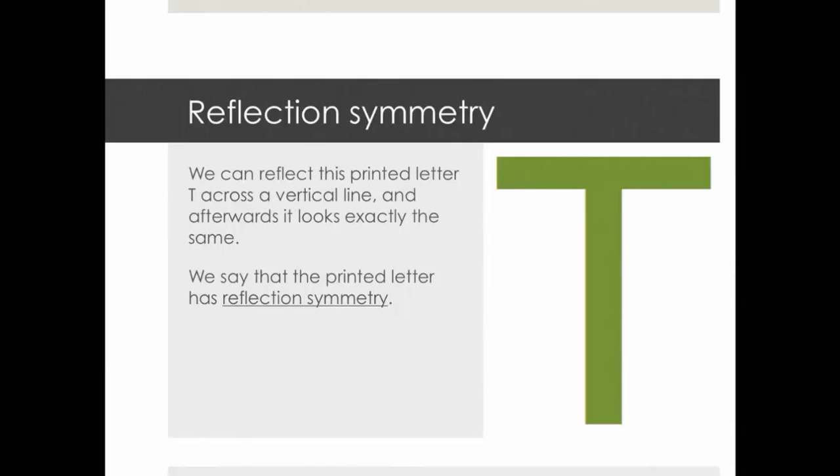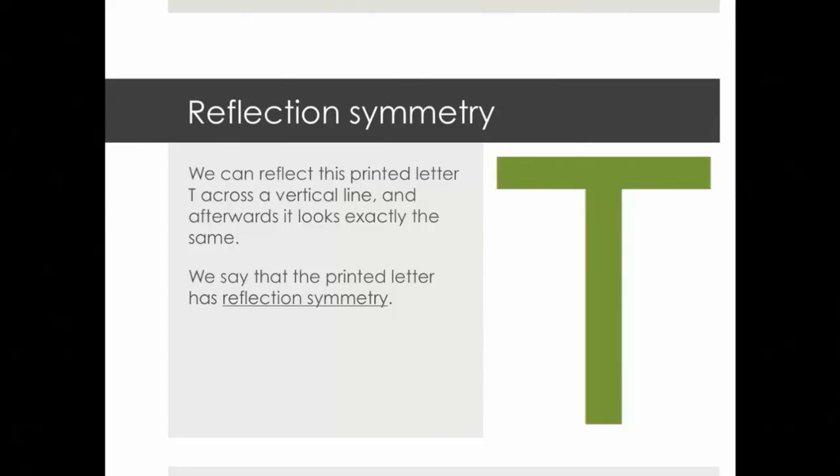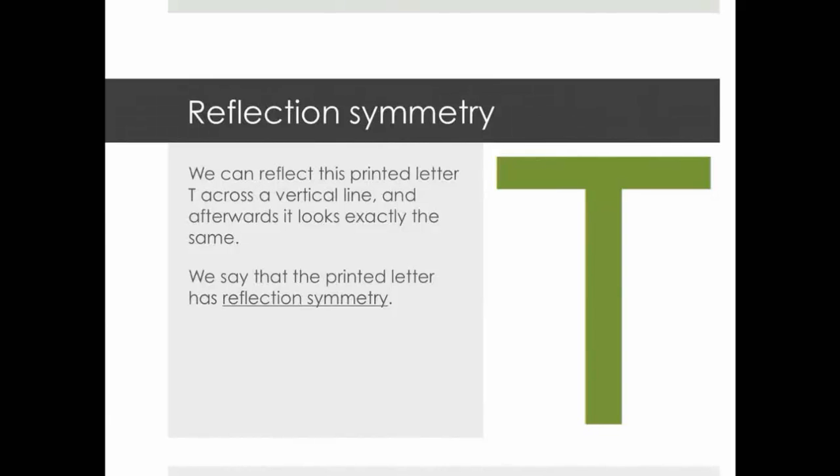All right, here's a different sort of symmetry. Let's consider this letter T that I'm showing you in green over on the right. We can reflect this printed letter across a vertical line, and afterwards it will look exactly the same. Now when I say we can reflect it, what am I saying we can do? Let's suppose that we had that green letter T cut out of a piece of green paper. We could pick that up, turn it over, and set it back down again. It would now be upside down as far as the sheet of paper is concerned. But it would look exactly the same. We couldn't actually tell that we had done that. And therefore, we say that this printed letter has reflection symmetry.